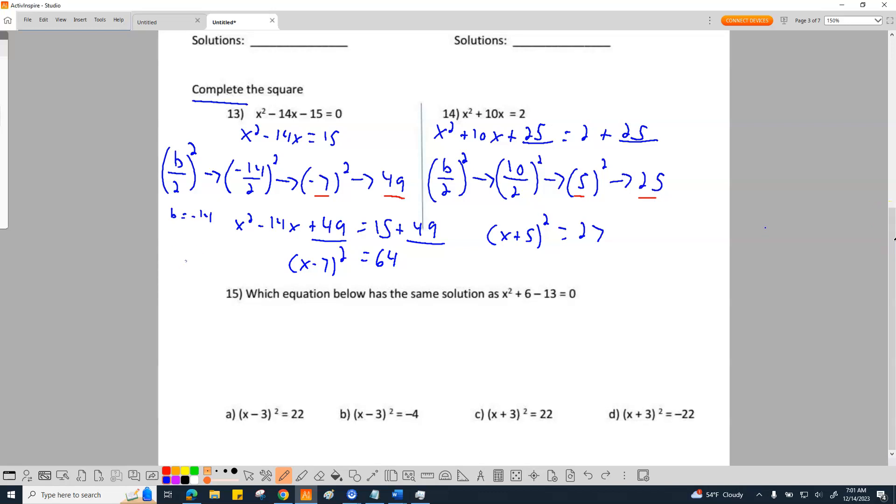All right y'all, I'm not going to work problem 15 for you, but I will tell you that 15 is completing the square. So what you need to do to get this going is look at x² + 6x, do you see that? It's supposed to be 6x right there.